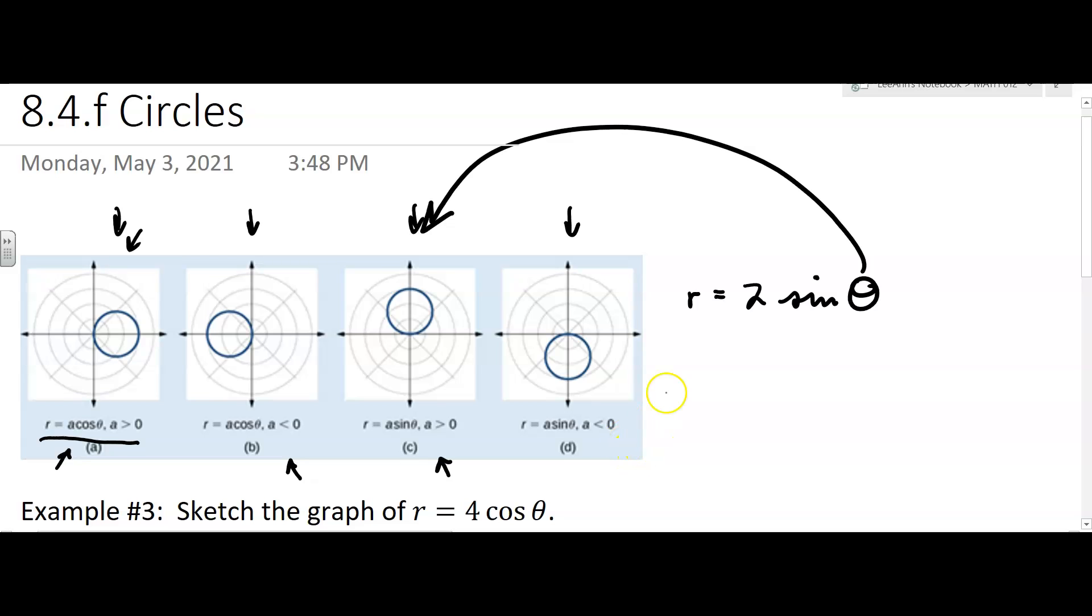Right, and then if a, in that case, we had a, which was 2, was greater than 0. But what if a had been less than 0? Well, then it would have reflected about the polar axis, which kind of makes some sense, and it would look like that.